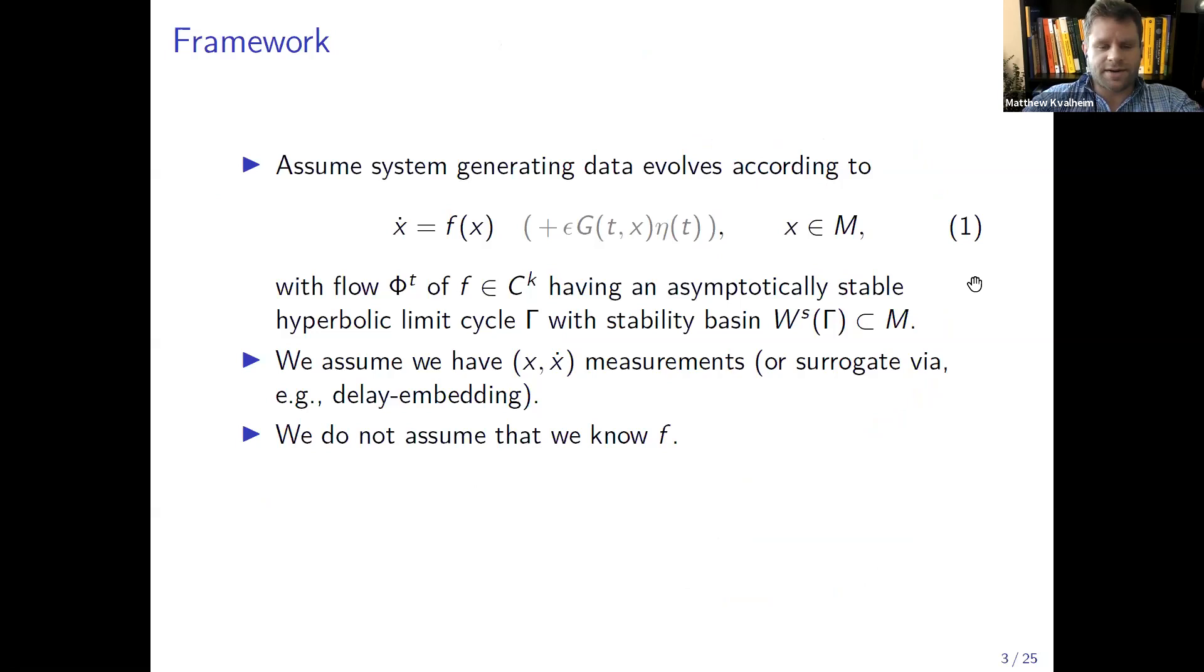Just to kind of set the stage and say what my theoretical framework is, what we want to do is assume that the systems, just like the one we saw, evolve according to some ordinary differential equation. The underlying system evolves according to some ODE with flow φ of some Ck vector field f which has an asymptotically stable hyperbolic limit cycle γ with some stability basin which I'll denote throughout the talk as Ws of γ, Ws for stable manifold.